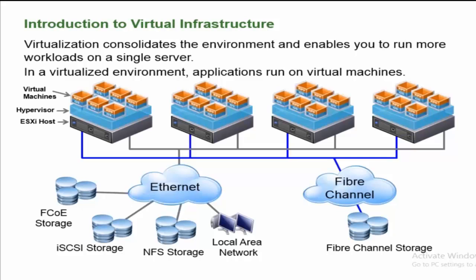In the form of virtual machines, you deploy operating systems and applications. On the first server, you install the hypervisor, which makes it an ESXi host. This provides the virtualization platform so you can run multiple operating systems and applications on it. Virtualization provides three key things: transformation of hardware into software, resource sharing, and flexible resource sharing. This transformation from hardware to software is achieved using the hypervisor.